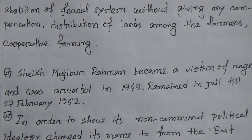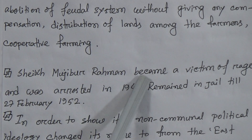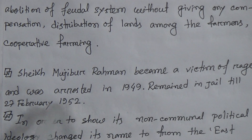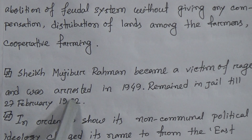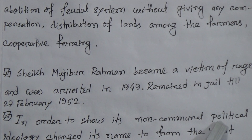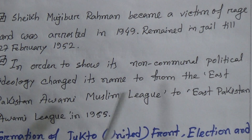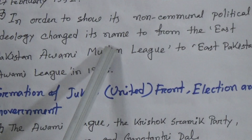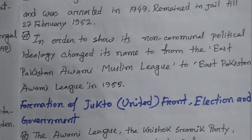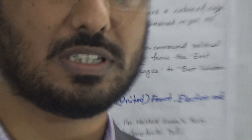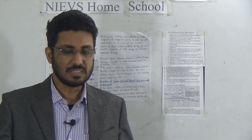As the Awami Muslim League demanded things that went in favor of the people but against the government, repression followed. Sheikh Mujibur Rahman became a victim of this repression and was arrested in 1949, remaining in jail until 27th February 1952. In 1955, to show their non-communal political ideology, the East Pakistan Awami Muslim League changed its name to East Pakistan Awami League, removing the word 'Muslim' from their name.